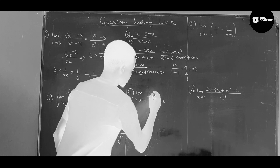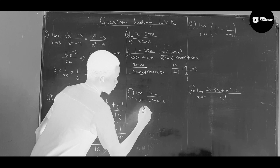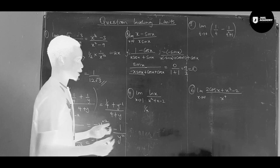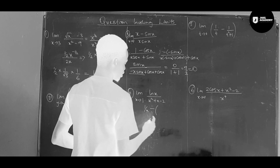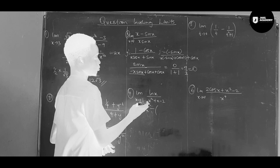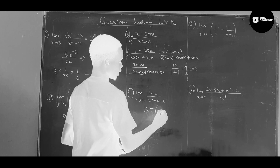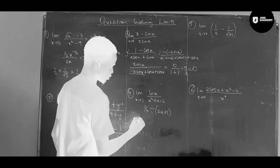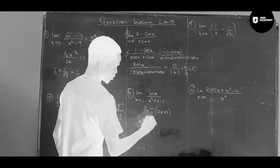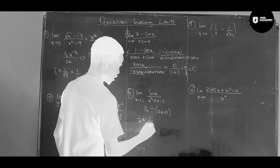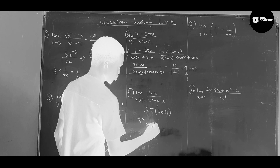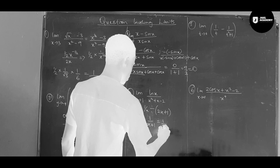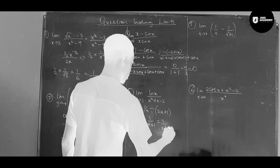Using L'Hôpital's rule and differentiating with respect to x: the derivative of x squared is two x and the derivative of x is one. So we get one over x times one over two x plus one, which gives us one over two x squared plus x.